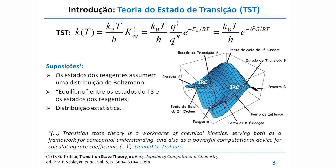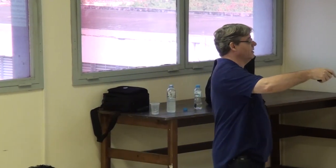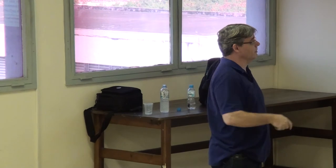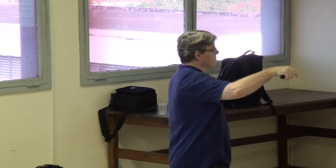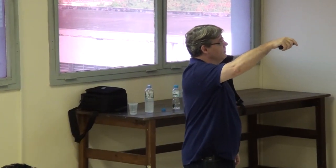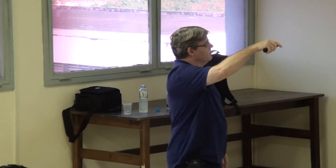Isso depende do tamanho do sistema e da precisão com que você quer calcular esses valores. Estimativas, mesmo sem computador, você pode fazer usando alguns dados já conhecidos, principalmente para o estado de transição, e obter algumas informações relevantes. Geralmente você não consegue uma concordância quantitativa com o valor experimental, mas algumas vezes consegue.